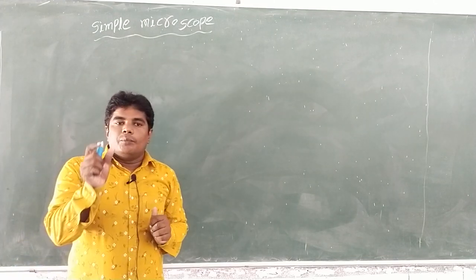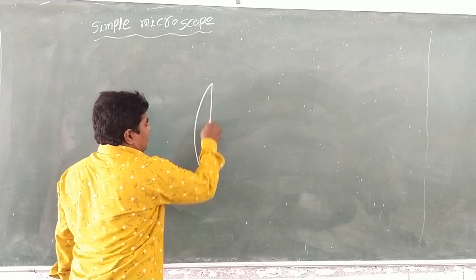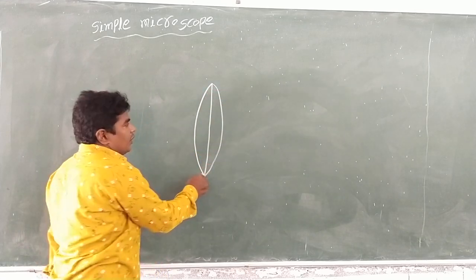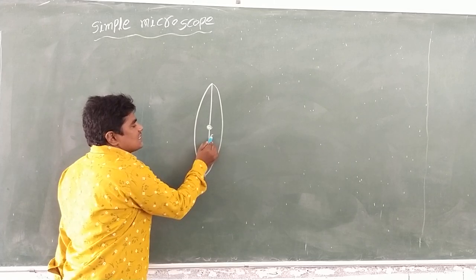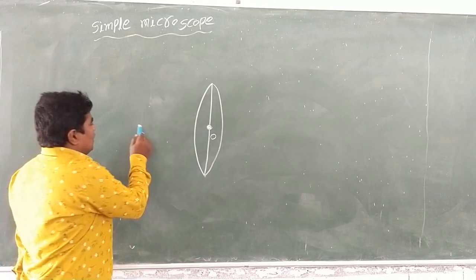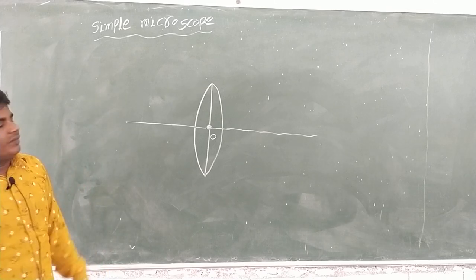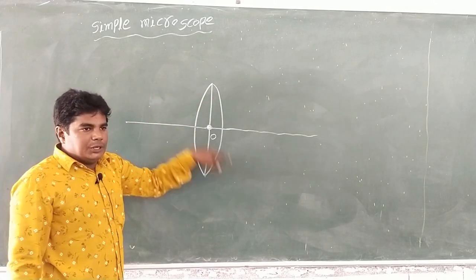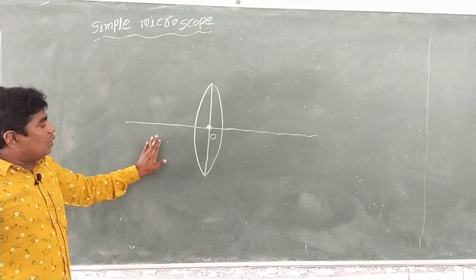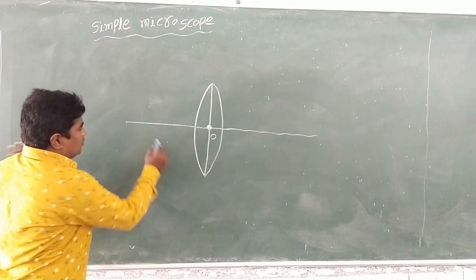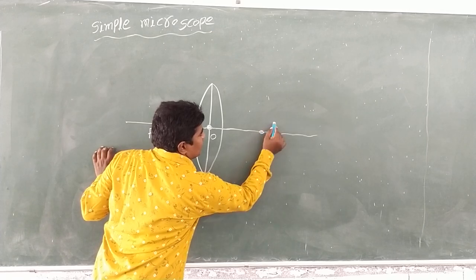In a simple microscope, there is a big convex lens, called a double convex lens. The center of the lens is called the optic center, represented by O. The line passing through the optic center is called the principal axis. The lens has two curved surfaces, and two focal points, both represented by F.